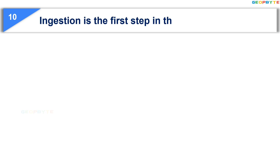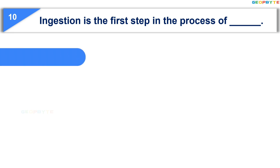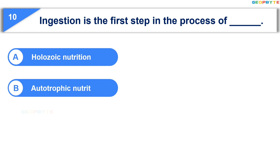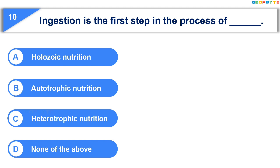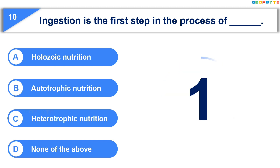The 10th question is: ingestion is the first step in the process of dash. Option A: holozoic nutrition; Option B: autotrophic nutrition; Option C: heterotrophic nutrition; Option D: none of the above. Your time is up and the correct answer is Option A: Holozoic Nutrition.